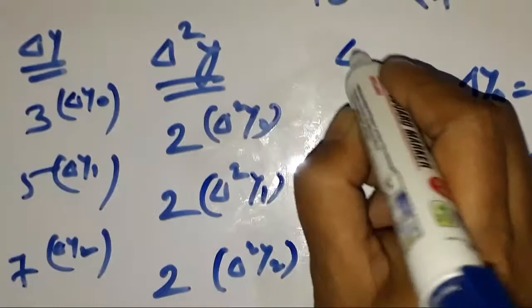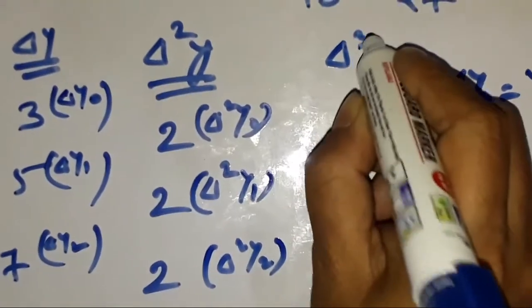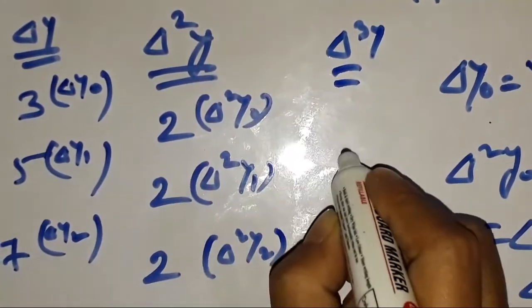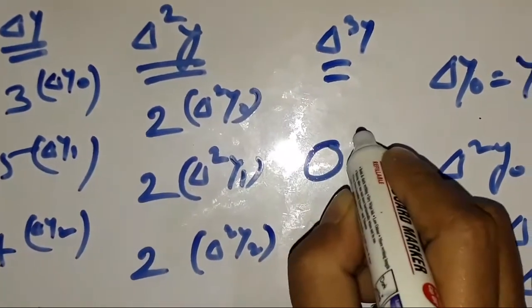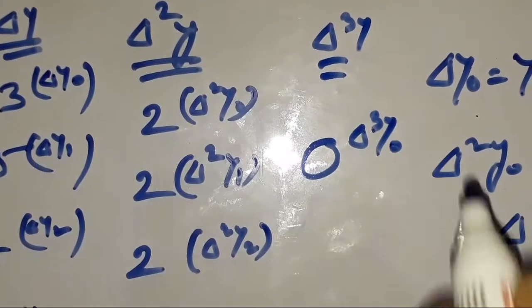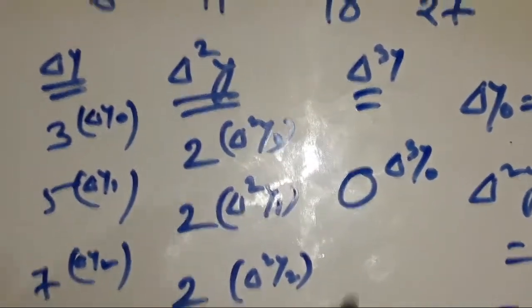The last column is Δ³Y. This value equals 0, so Δ³Y₀ = 0.